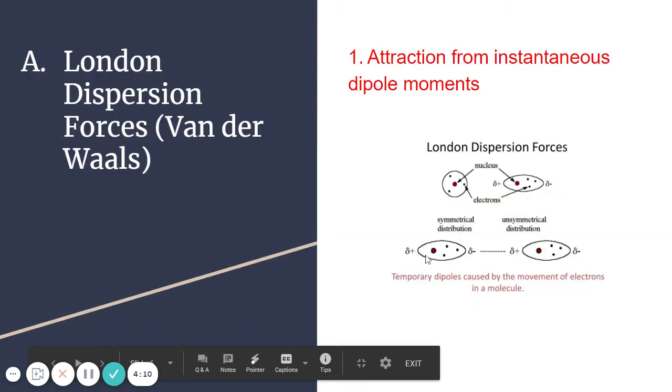Intermolecular forces. We're just going to go through the four basic types. We did do this in a previous chapter, but just as a reminder. London dispersion forces are the weakest type. They're also called Van der Waals forces, and it's an instantaneous attraction between two non-metals.